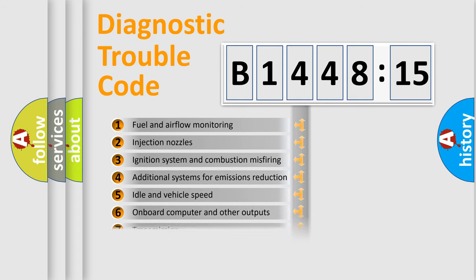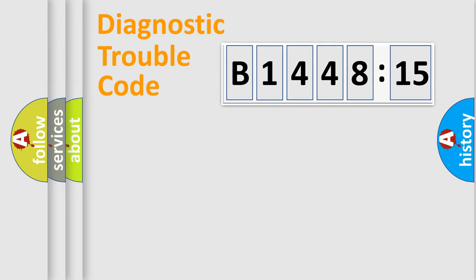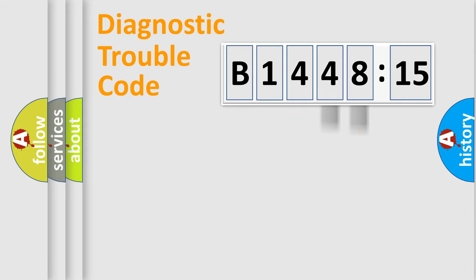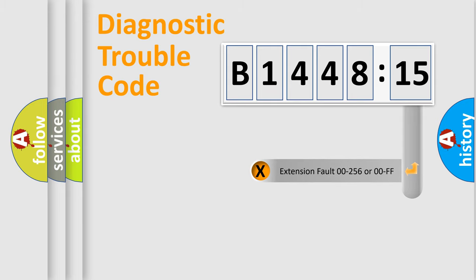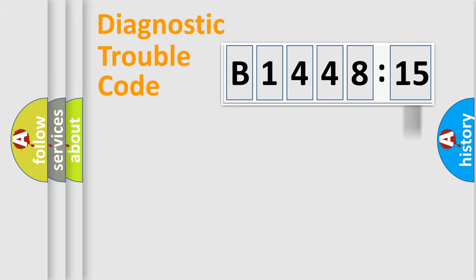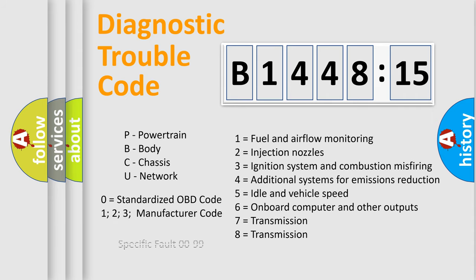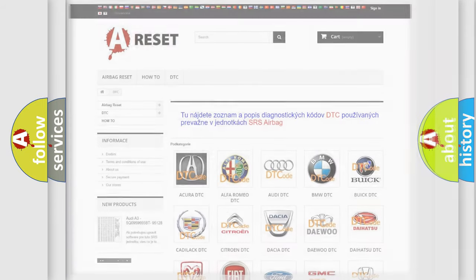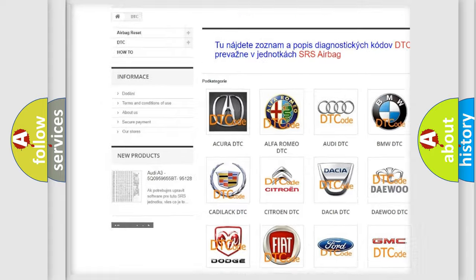The third character specifies a subset of errors. The distribution shown is valid only for the standardized DTC code. Only the last two characters define the specific fault of the group. The add-on to the error code serves to specify the status in more detail — for example, a short to ground. Note that such a division is valid only if the second character code is expressed by the number zero.